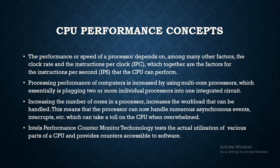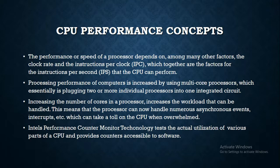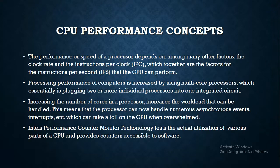Multi-core processors are basically processors where a single-core processor is already in the integrated IC, and to make it multi-core, two or more individual processors are added to the IC. Increasing the number of cores in a processor increases the workload that the CPU can handle. A processor can now handle numerous synchronous events and interrupts. For example, with a multi-core processor, if an interrupt occurs, both the original function and the interrupt can be handled simultaneously. If one function is too much for a single-core CPU, the multi-core processor can be used for that same function.